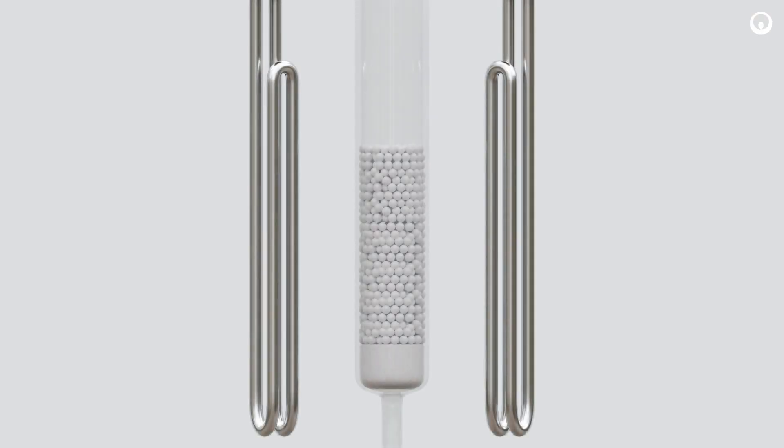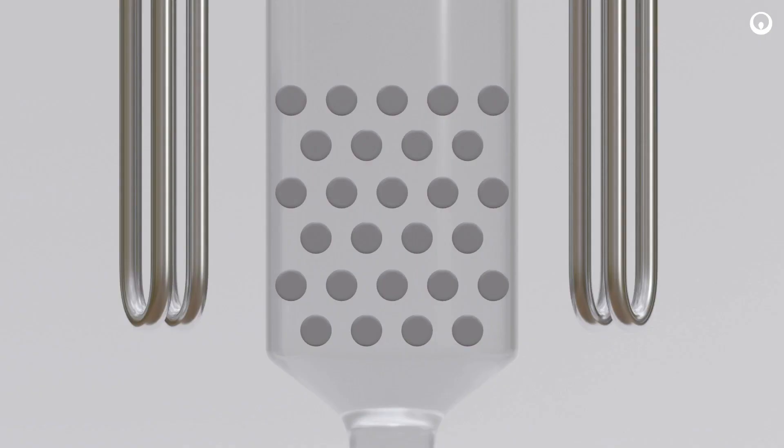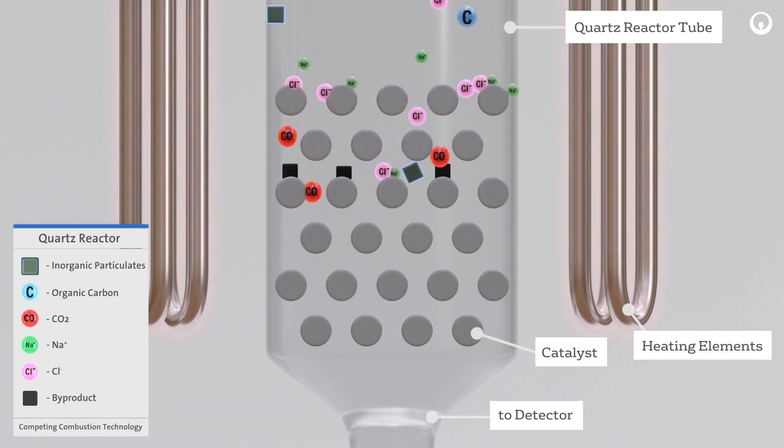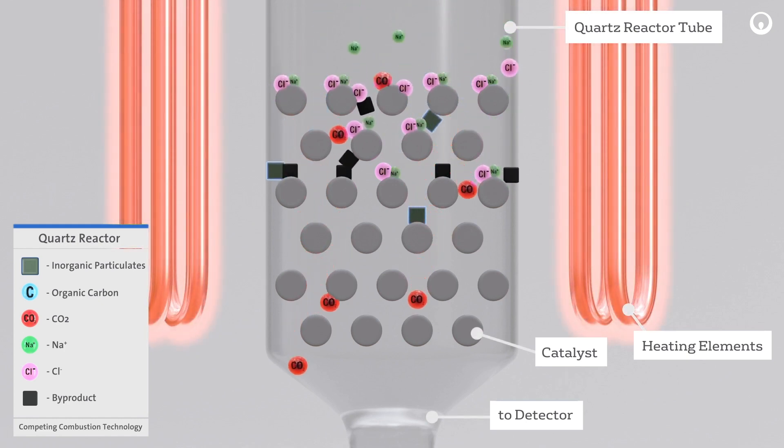TOC analyzers that rely on combustion technology have a quartz reactor that is packed with an expensive catalyst, constantly heated from 680 to 1200 degrees Celsius. Dilution water and sample including inorganic salts and particulates are injected into the reactor. The sample is oxidized with the aid of the catalyst and heat.